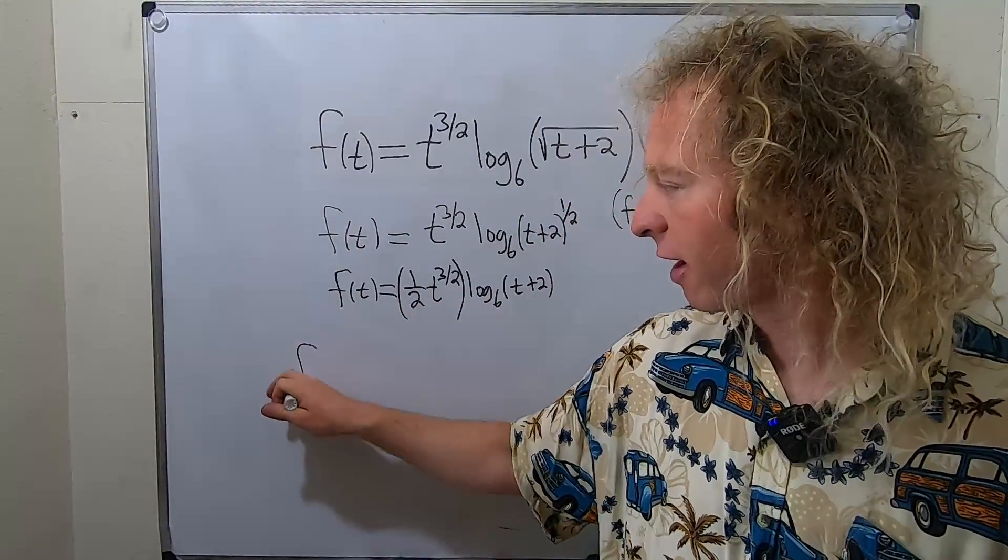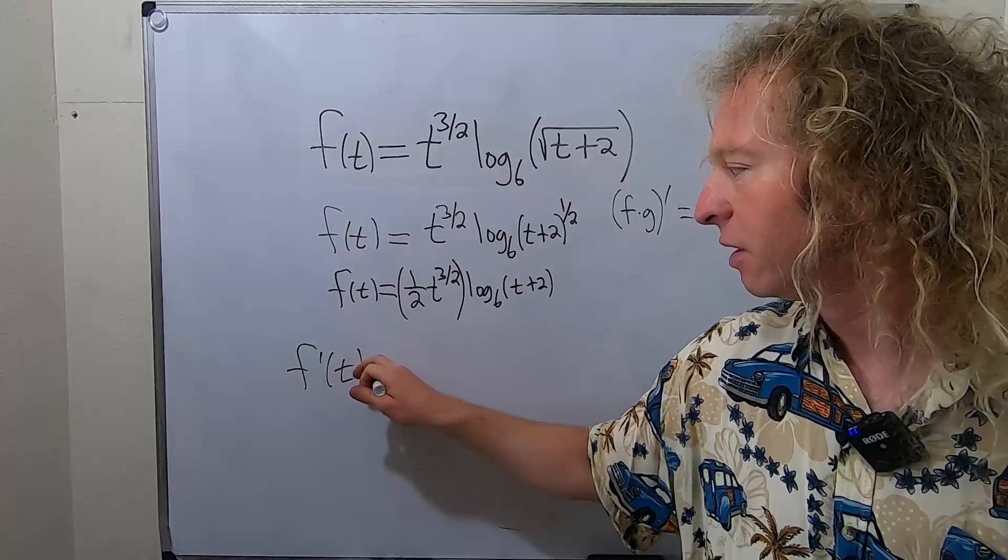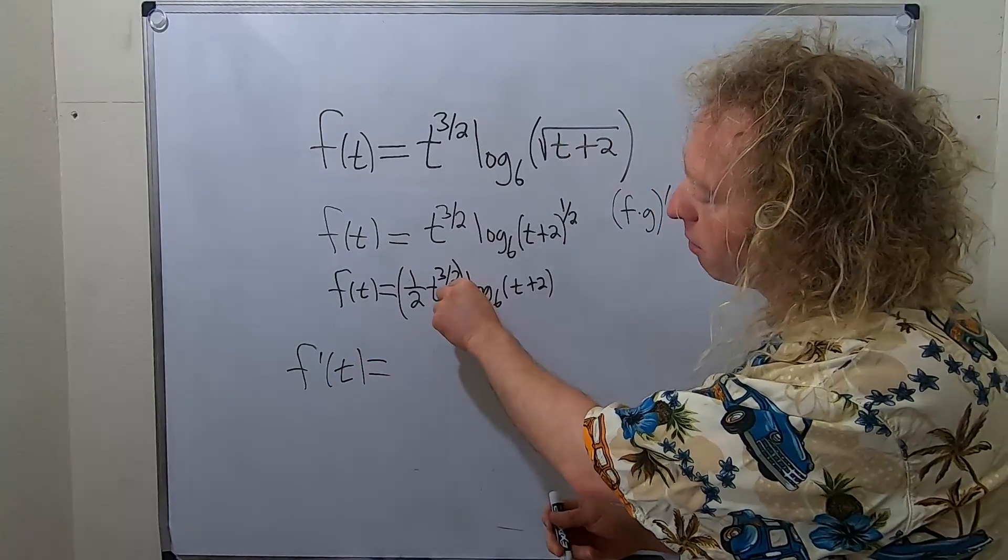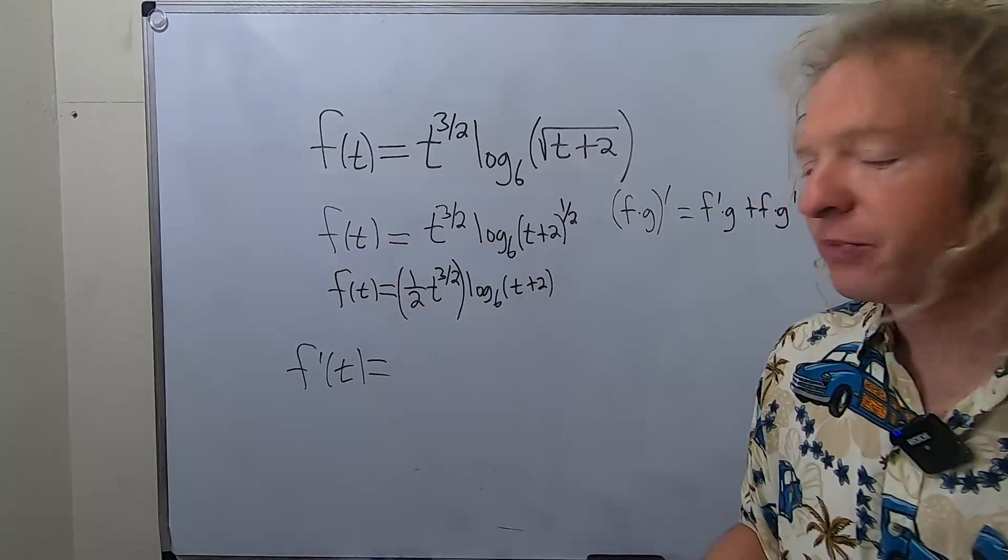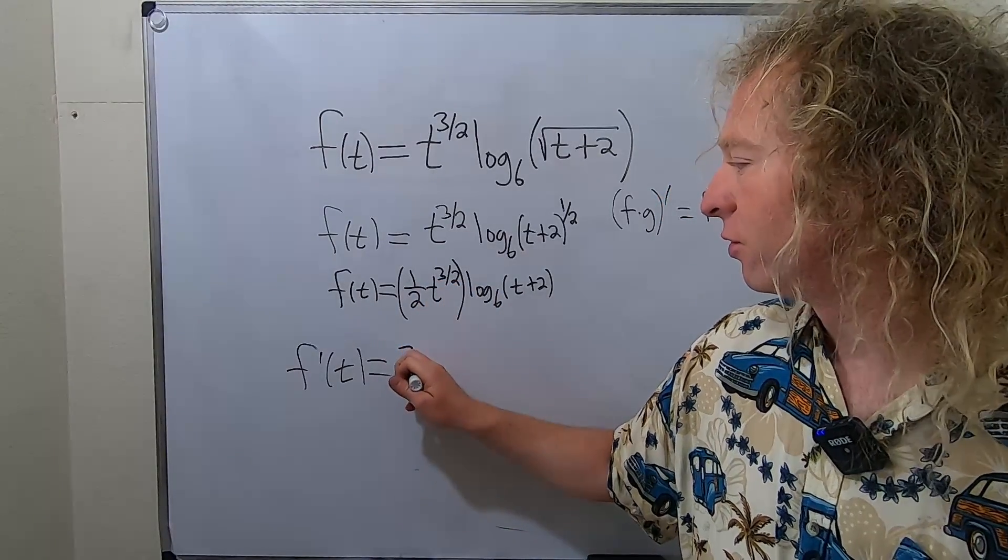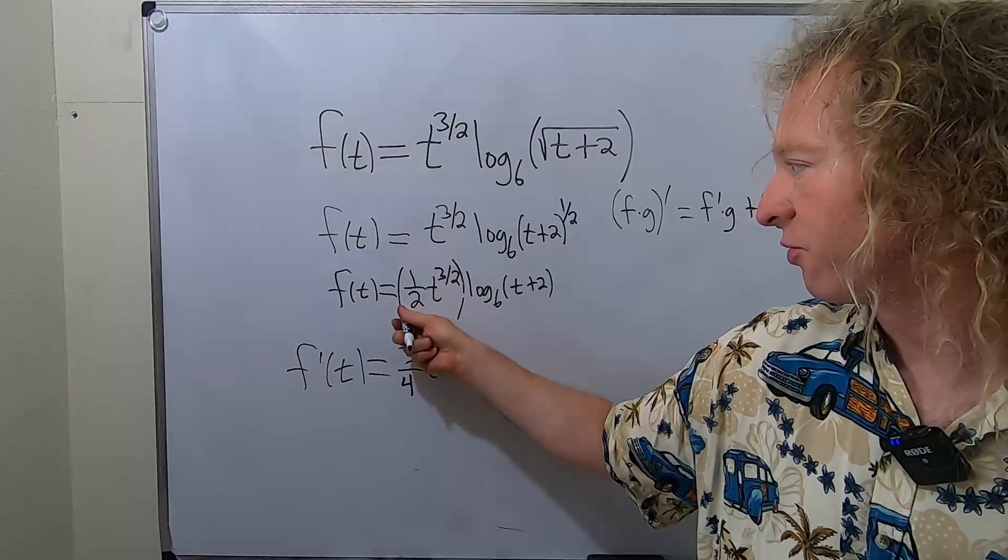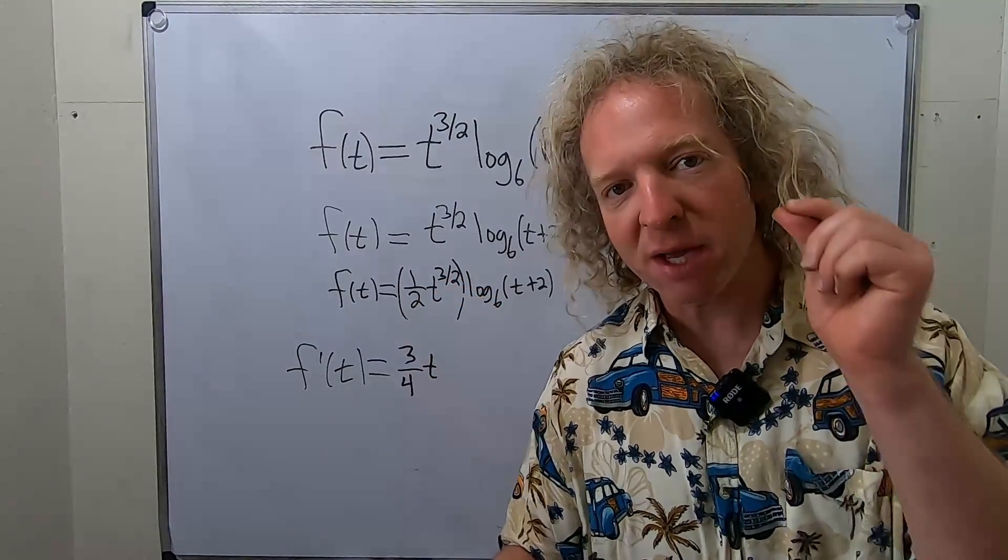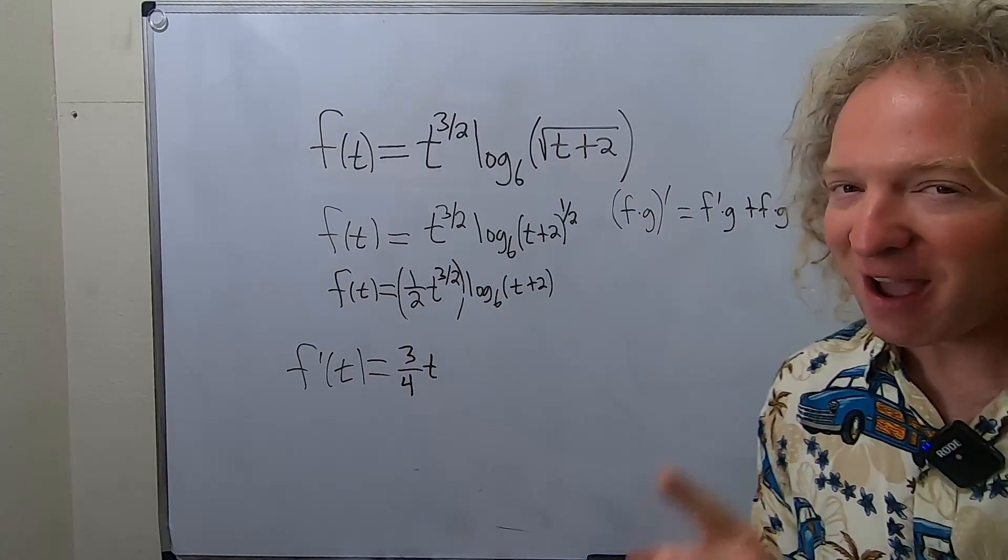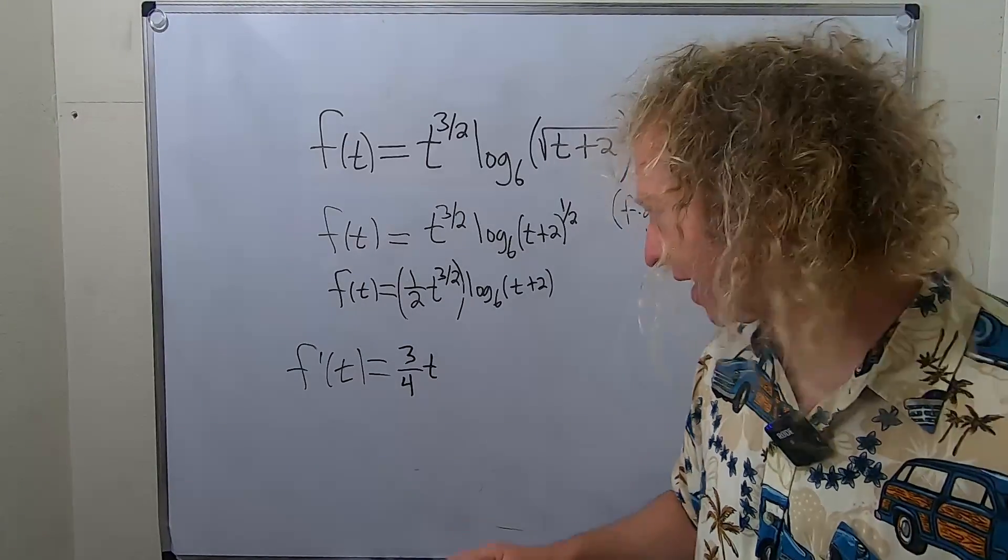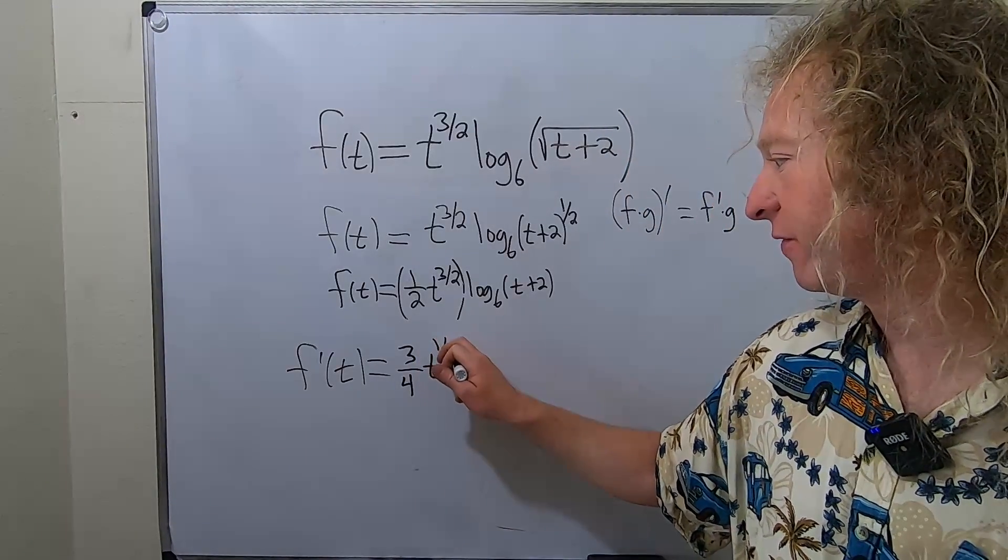So let's do it. So f prime of t. So we're going to take the derivative of the first piece. So here we're going to multiply 3 halves times 1 half. So that's 3 fourths. So 3 fourths t, because you bring it down. So 3 fourths, 3 halves minus 1. So 3 halves minus 1 is really 3 halves minus 2 halves. So that's 1 half.